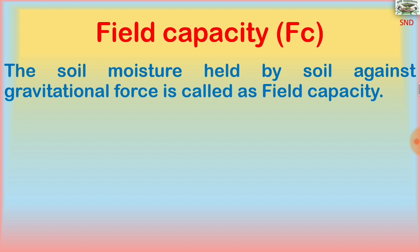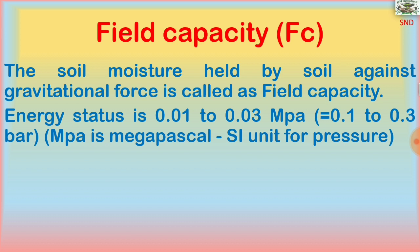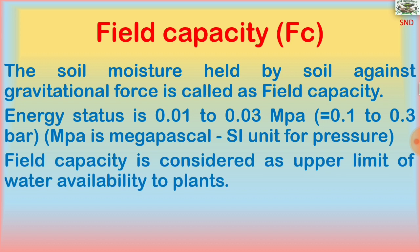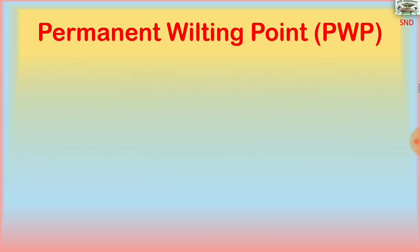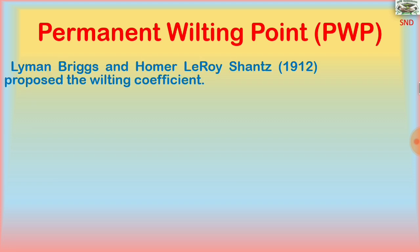Field capacity is the soil moisture held by soil against gravitational force. It is half of the maximum saturation level or maximum water holding capacity of the soil. The energy status is 0.01 to 0.03 megapascals, equal to 0.1 to 0.3 bar. Field capacity is considered the upper limit of water availability to plants, with a PF range of 2.54.